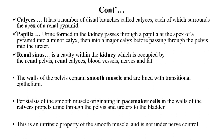The smooth muscle lining of the pelvis acts as a pacemaker through its intrinsic property, generating movement that propels urine through the major and minor calyces, pelvis, and into the ureter.